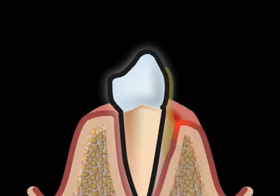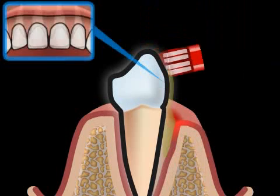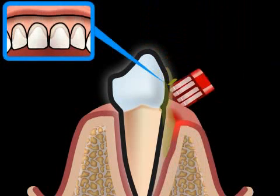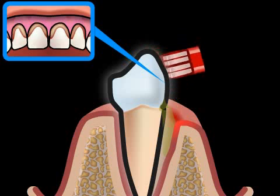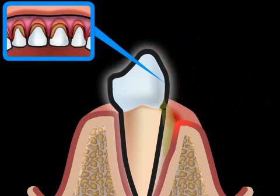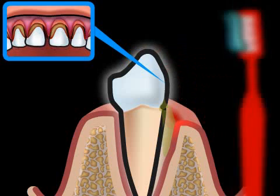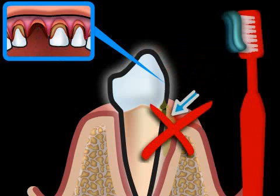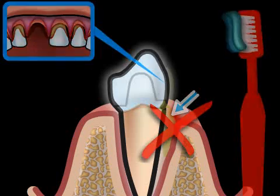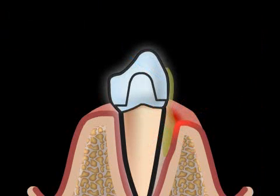Eventually, as periodontitis progresses, it develops its own dynamic, so that even if you change your brushing habits and start thoroughly removing plaque, you can no longer stop or slow the development of the disease — thorough cleaning of the bone pockets is no longer possible. Therefore, it's important to always remove plaque thoroughly from the surface of the tooth.